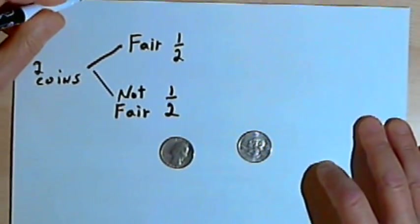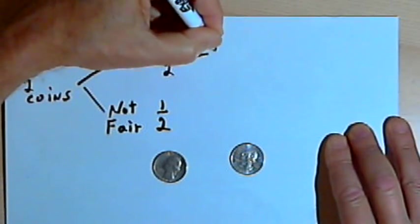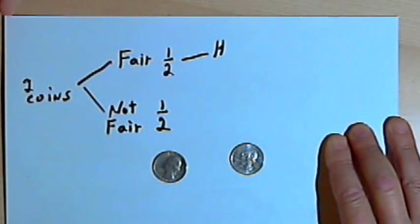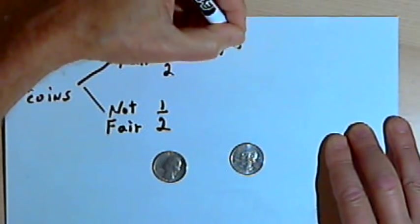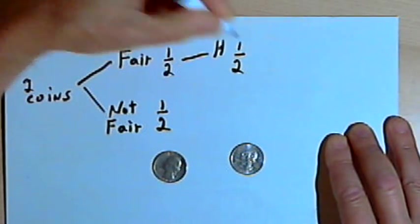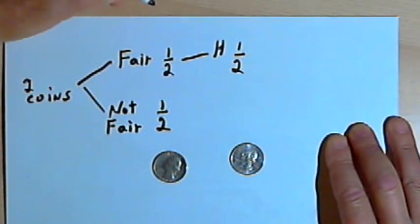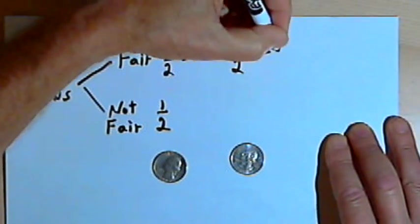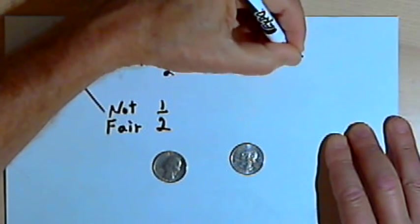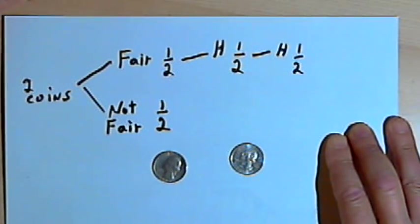Now if I pick the fair coin and I flip it, what's the probability that it comes up heads? Well, this is a fair coin. So flipping a fair coin, there's a 50% probability, or one-half, that it comes up heads. If I flip it a second time, then once again there's a 50% or one-half probability that it comes up heads.